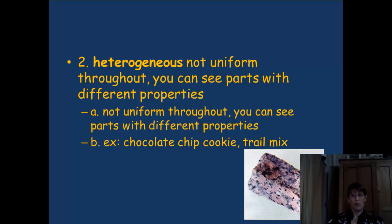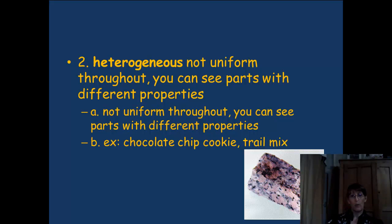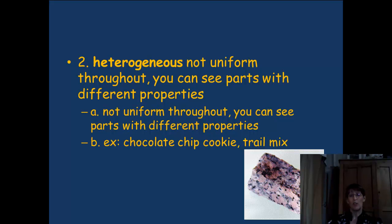If it's a heterogeneous mixture, it means it's not uniform throughout. Like if somebody at McDonald's was wearing a Burger King uniform — they would stand out. So heterogeneous means it's not uniform throughout; you can see parts with different properties. Chocolate chip cookies are a great example — you can see the chocolate chips, the walnuts or pecans. Trail mix is another: you can pull out the M&Ms, raisins, peanuts, and all the different pieces. Hetero means different.